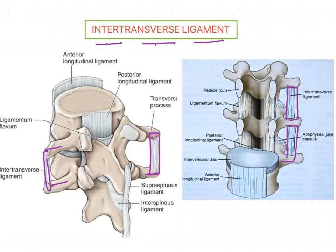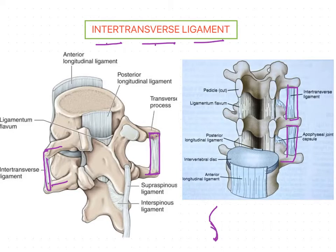Here also you can find the inter-transverse ligament — the fibers are attaching the transverse processes of the adjacent two vertebrae. These ligaments passing between the transverse processes also have fibers attached to the deep muscles of the back. In the cervical region, the inter-transverse ligaments show only scattered fibers — only a few fibers of the ligament are formed, and those are replaced by the inter-transverse muscles.